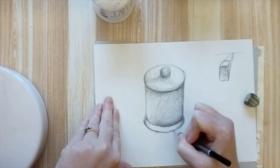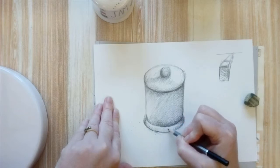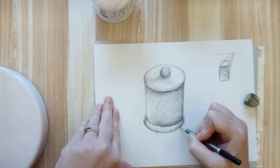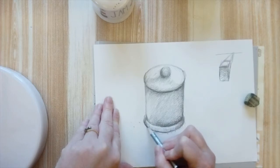And I'm starting to do a little bit more directional shading, so instead of doing in the same direction as I did the round, I'm kind of taking more vertical line, leaving some areas white.